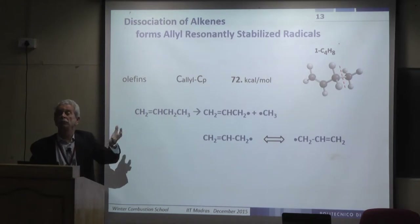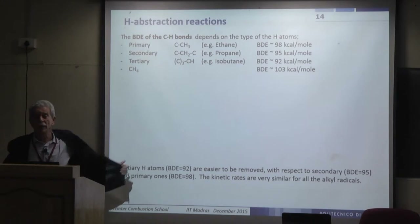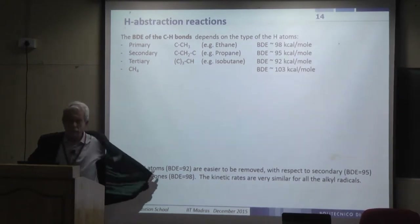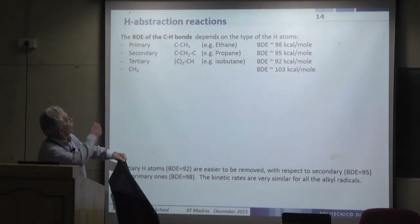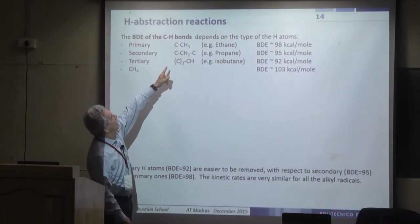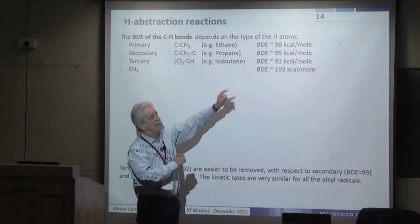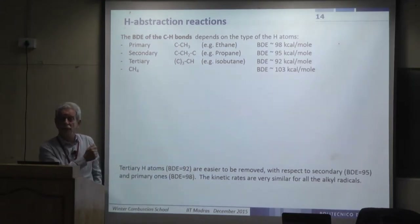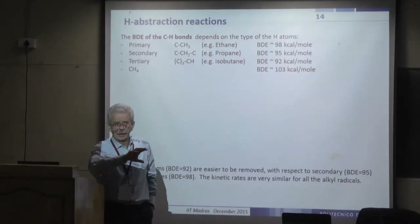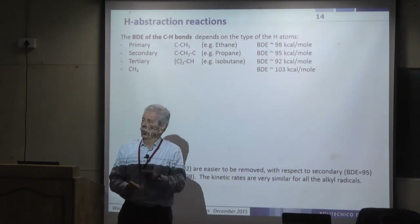Moving to H abstraction reactions: the C–H bond dissociation energy for a primary hydrogen is ~98 kcal/mol, decreasing to ~95 for secondary and ~92 for tertiary. A radical abstracting hydrogen shows different selectivity depending on whether it abstracts primary, secondary, or tertiary hydrogen. Reference rate parameters are defined for abstraction by H radical (forming H₂), OH radical (forming H₂O), and methyl radical (forming methane), with all referenced to primary H atoms.